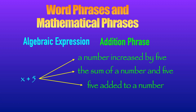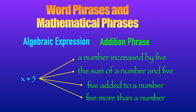Another addition phrase is '5 added to a number.' When you use the term 'added to,' you should interchange the first term with the second term. So if we use 'added to' in this algebraic expression, 5 will come first: '5 added to a number.' And that is the same as '5 more than a number.' So if we use 'added to' or 'more than,' we interchange the terms — the first term and the second term.